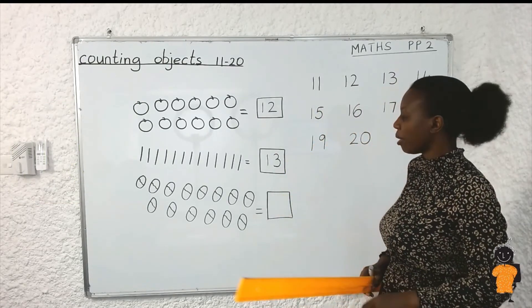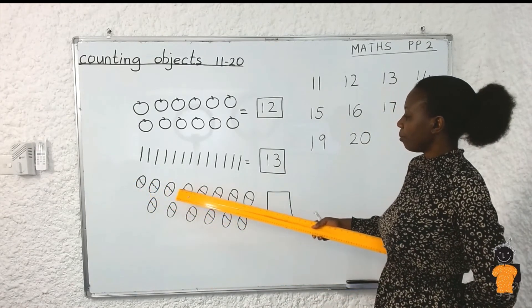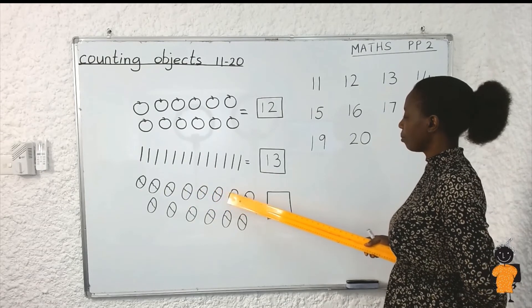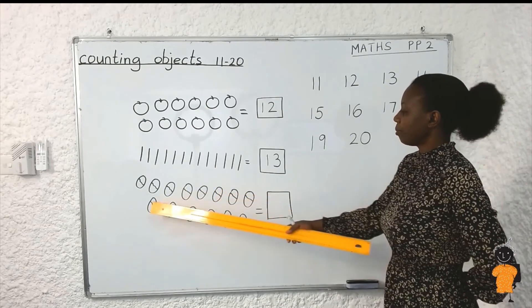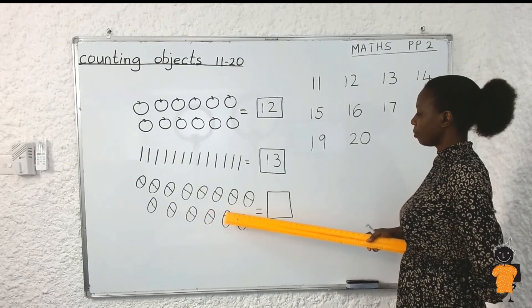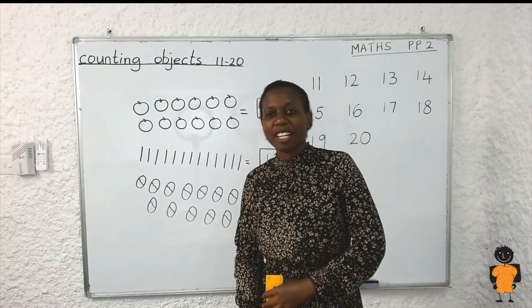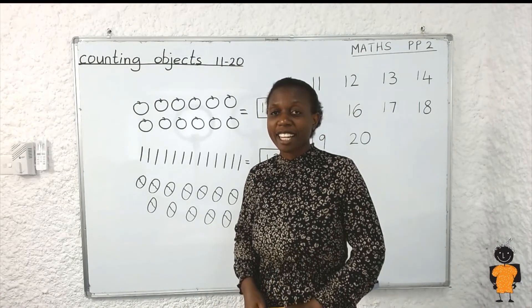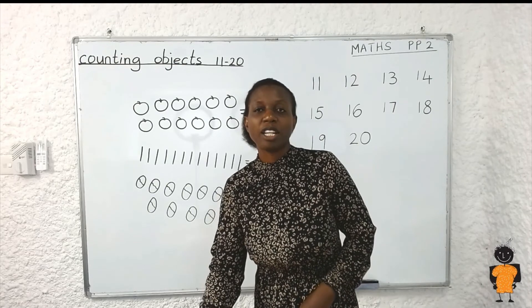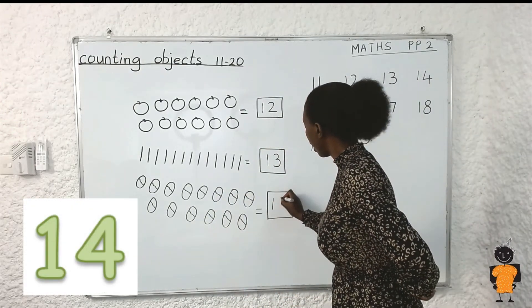And lastly, we have the eggs. Can you count the eggs, my dear learners? Count them loudly. How many eggs did you count? Did you get 14 eggs? Those who got 14 — wonderful! So we write number 14, which is 1 and 4.